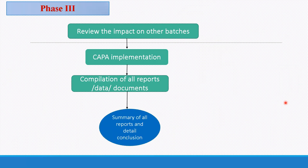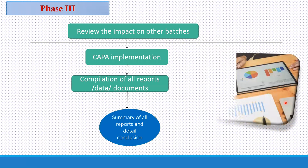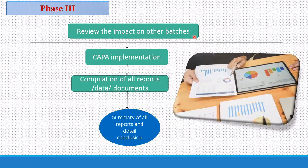Phase 3 involves reviewing the impact on other batches. CAPA implementation is required here. Compilation of all reports, data, and documents of all types is needed. A summary of all reports and findings is required, along with a detailed conclusion.